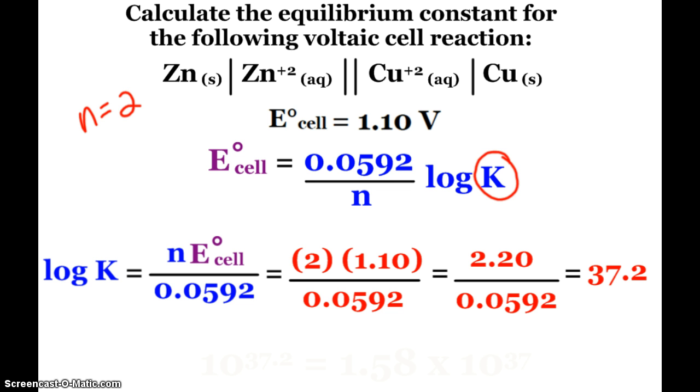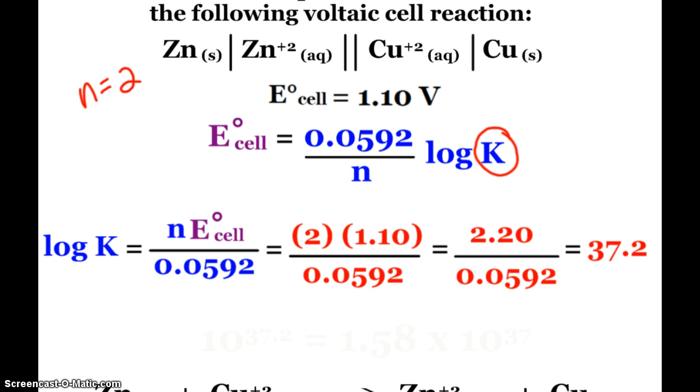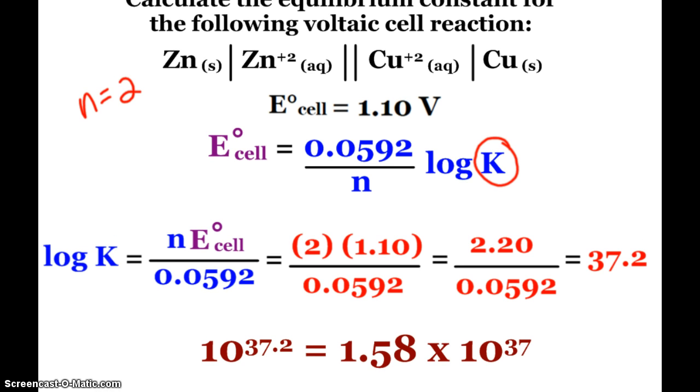Remember, that's not our K value yet. That's the log of K. So, I have to do the anti-log of that. And when I do that, I end up with 1.58 times 10 to the 37th. What does that K value mean for us? That's a huge number. Those are the kinds of numbers we see with reactions that pretty much go to completion, like our combustion reactions in the past. At equilibrium, we would definitely see pretty much all products for this reaction.